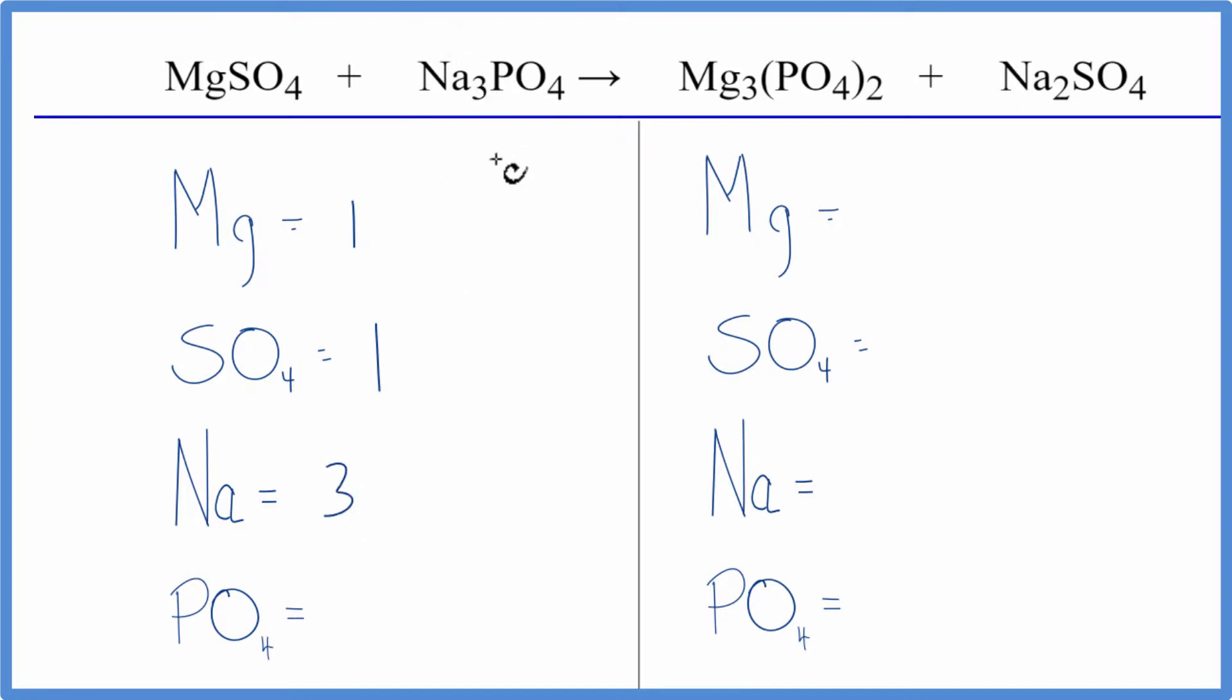For sodium, we have three of those. And then PO4, we have it here. It stays together. PO4 is over here again. Let's just call it one thing - we have one PO4, one phosphate ion.